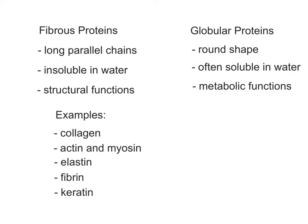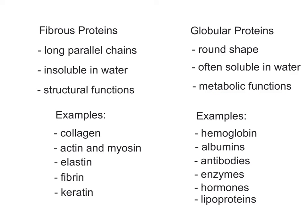Globular proteins have a rounder, more spherical shape and are usually soluble in water. Many globular proteins function as part of the body's metabolism. Examples include hemoglobin, which transports oxygen, and albumins, which help regulate blood pH.